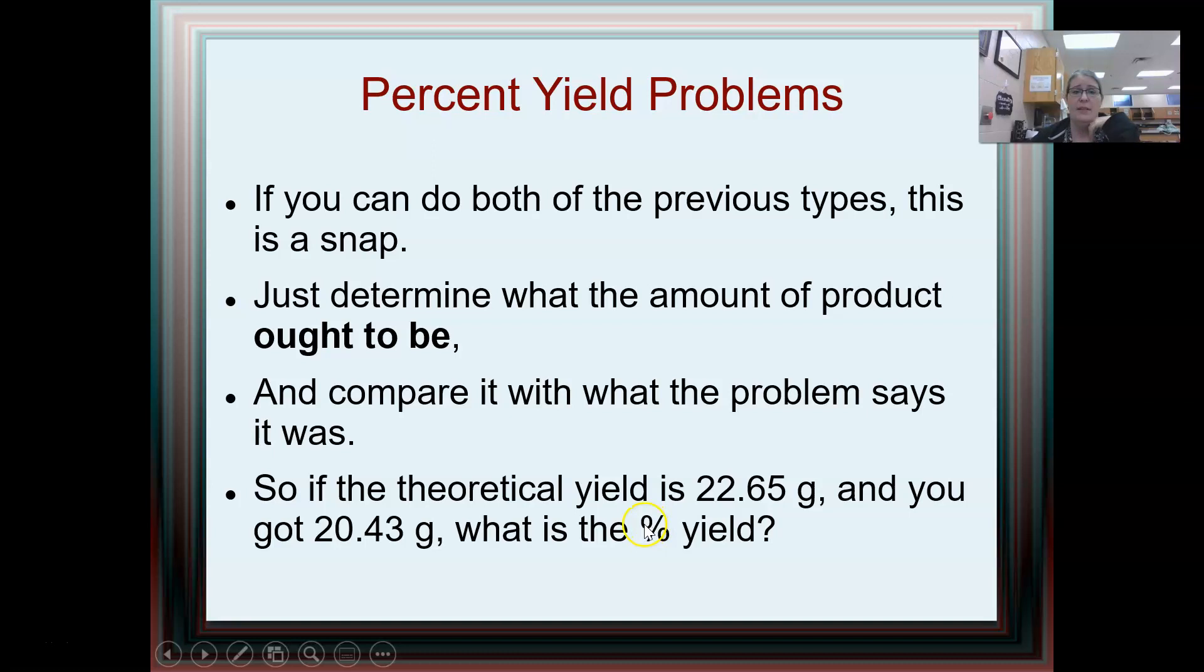Percent yield problems. If you can do these, the rest of it is a snap. So you are just going to use a stoichiometry problem, whether you use a RECA table or conversion factors, to find out what the amount of the product ought to be and compare with what the problem says you actually got or compare with what you actually have in the lab. So the theoretical yield in this situation, which comes from the stoichiometry, would be 22.65. I actually got 20.43. So I'm just going to take 20.43, divide it by 22.65, and multiply by 100 because that's what we do with percents. And I get 90.2%.